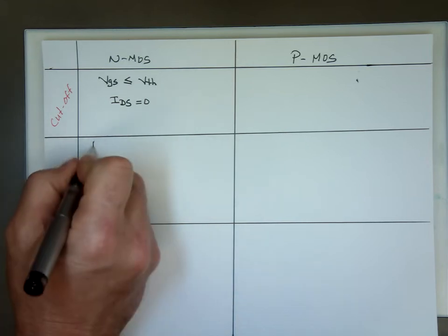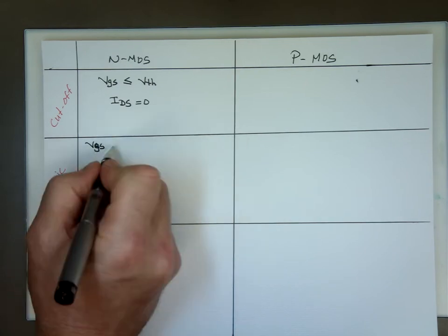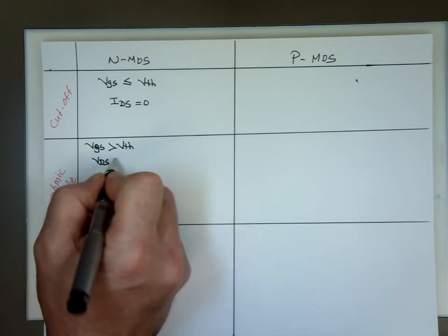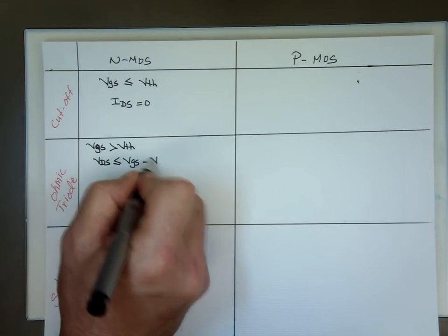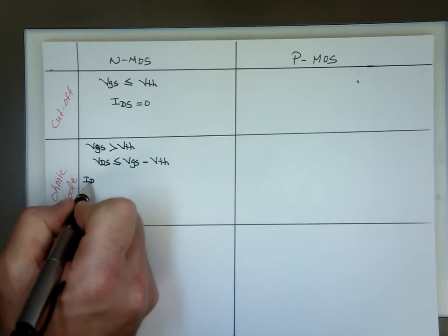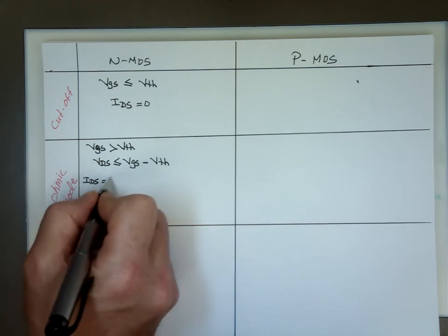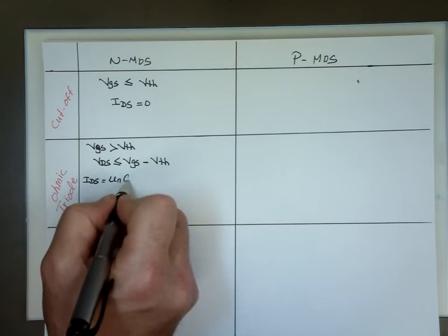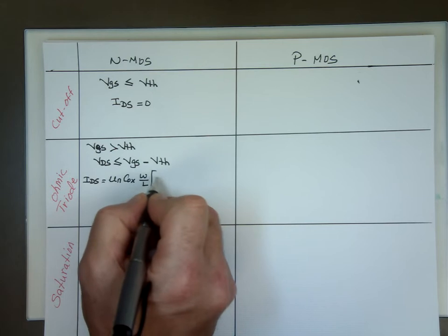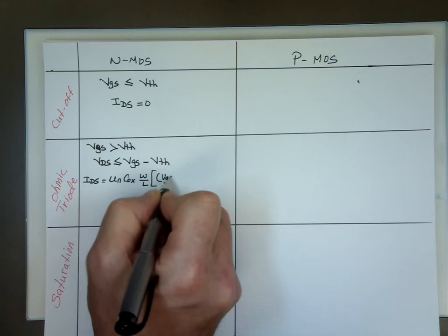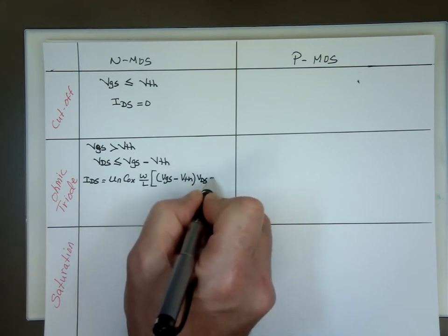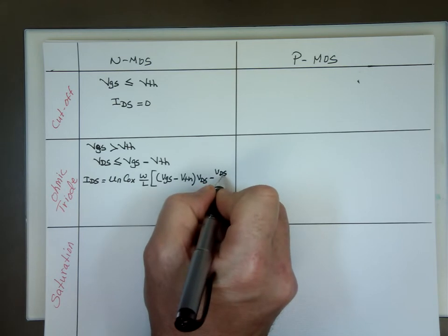If VGS is greater than V threshold, then VDS is less than or equal to VGS minus V threshold. We are in the ohmic region. And if you want to find the current, good luck here. This is μn, and I'll explain that on the next page because it's a nice clean page. Cox times W over L times VGS minus V threshold times VDS minus VDS squared over 2.